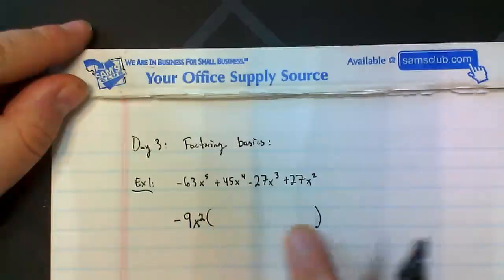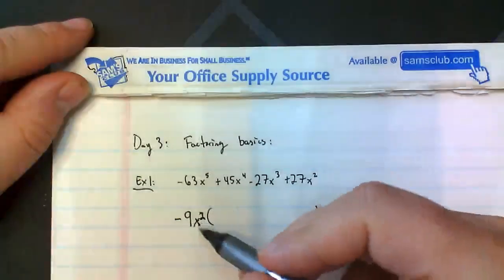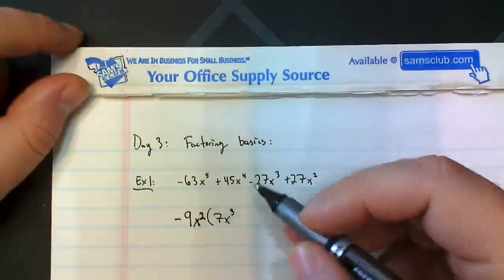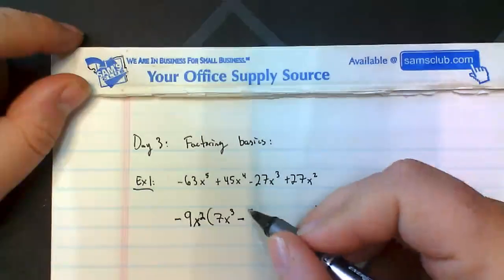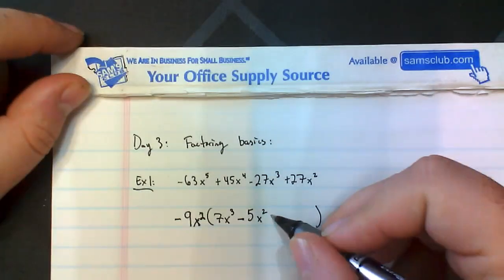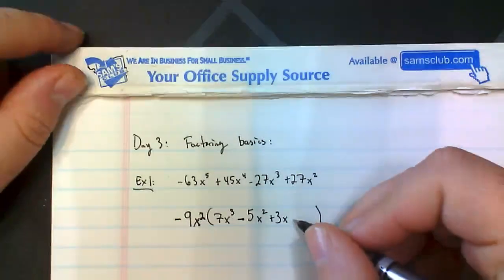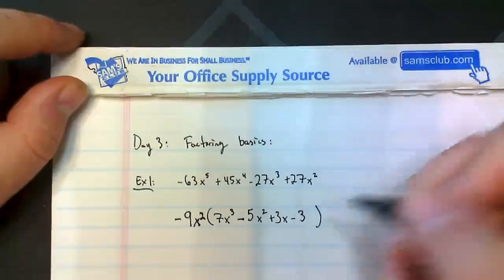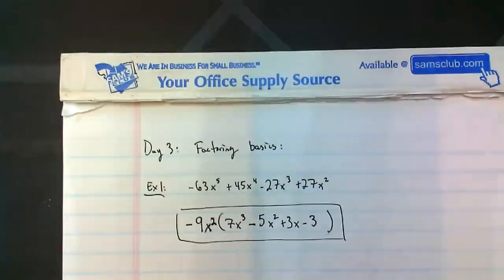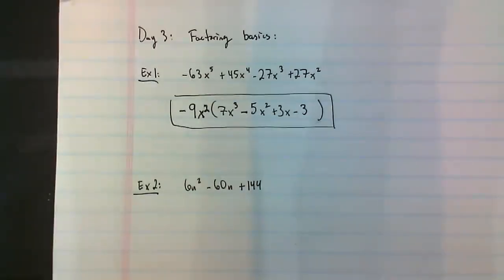Now we need to write the rest of the expression, and that's how you use your parentheses. You need to put inside these parentheses each term that negative 9X squared multiplies with to give you that back. So negative 9X squared times 7X cubed gives you negative 63X to the fifth. Negative 9X squared times negative 5X squared gives you 45X to the fourth. Negative 9X squared times negative 3 gives you 27X squared. So this right here is your final expression for factoring out the term.